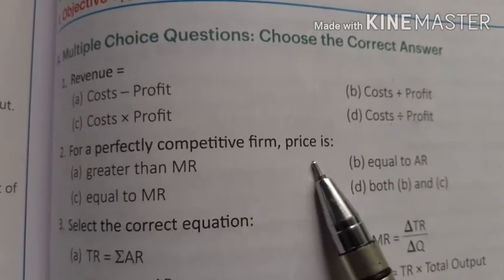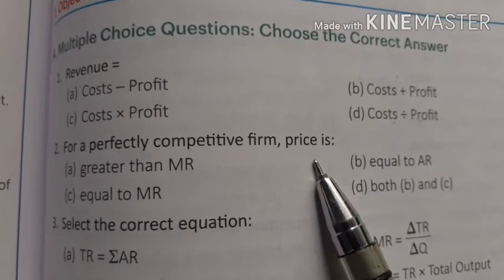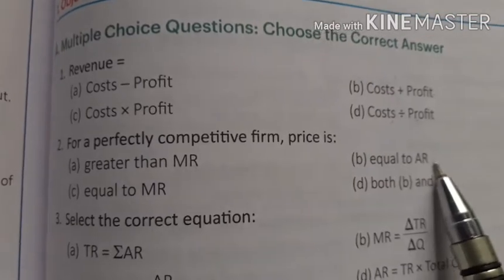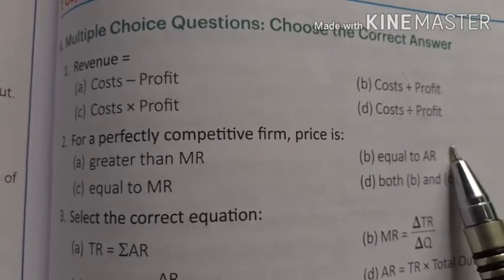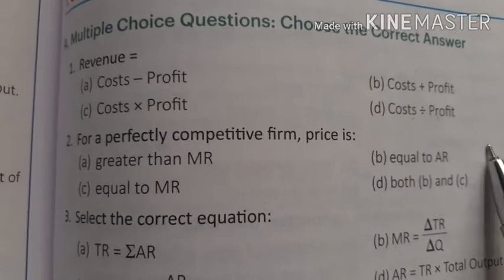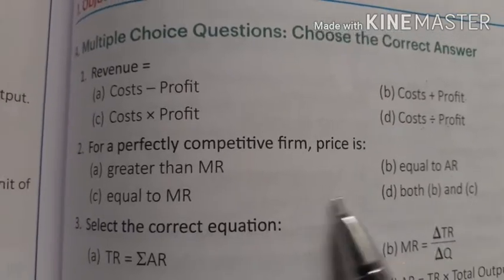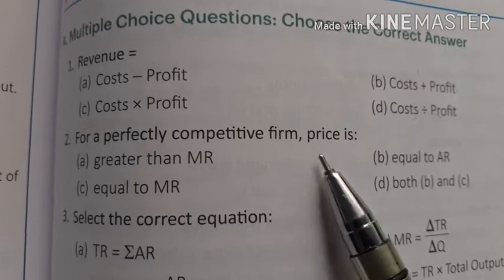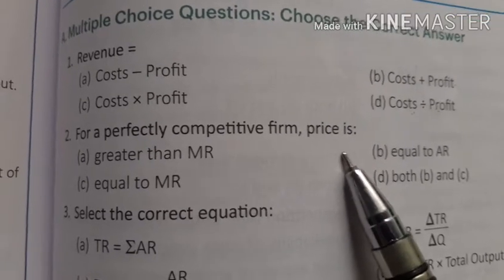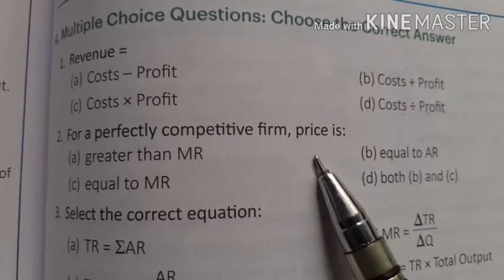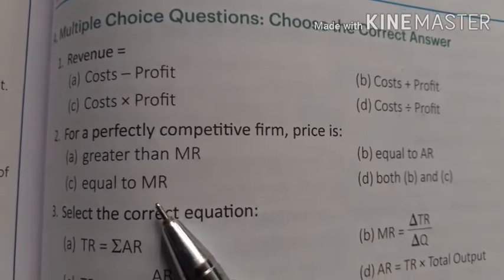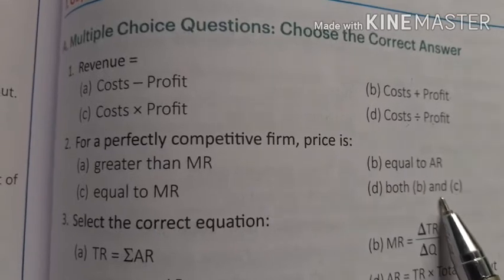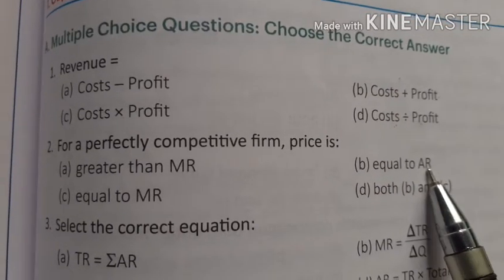In a perfectly competitive market, price equals AR because average revenue tells us the rate at which goods are sold. Also, AR equals MR because TR increases at a constant rate, so the difference — and therefore MR — is also constant. So both B and C are correct, making D the right answer.